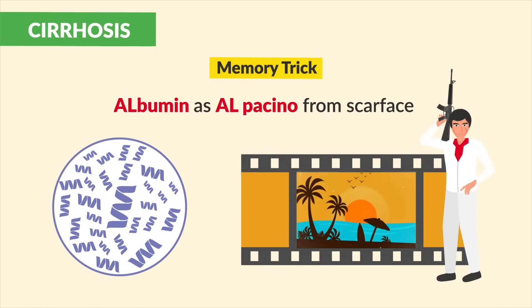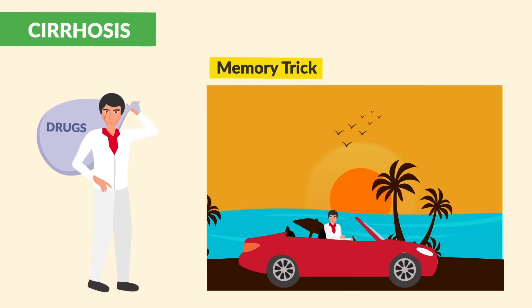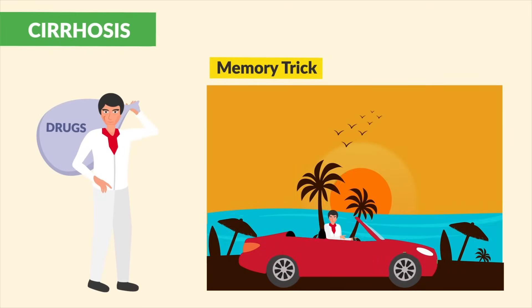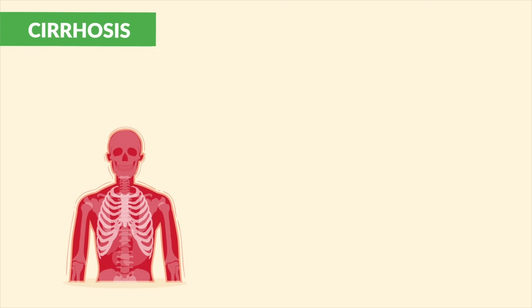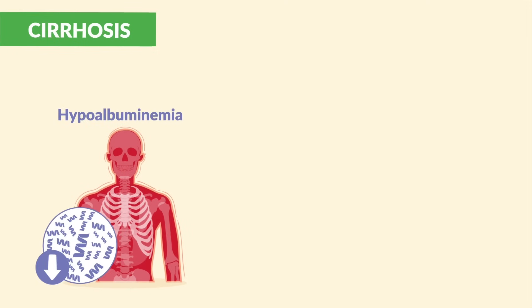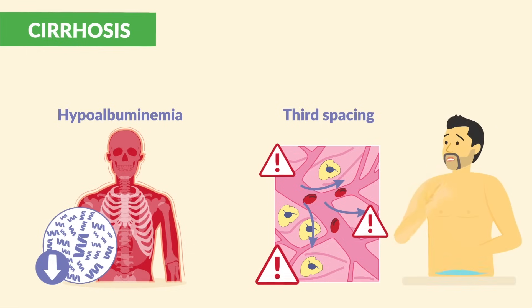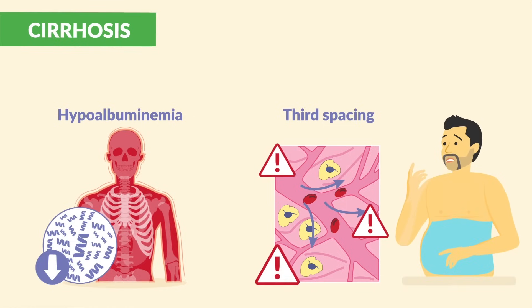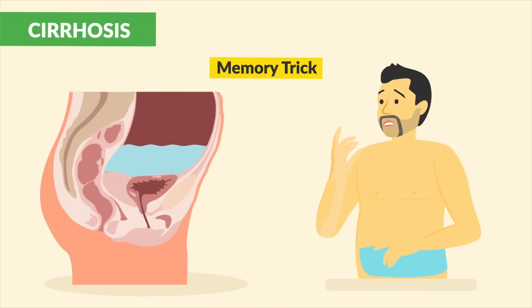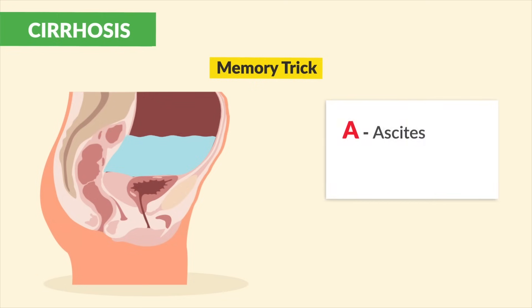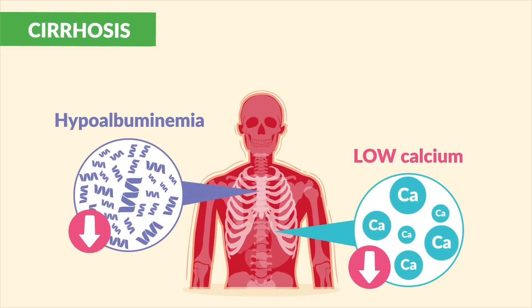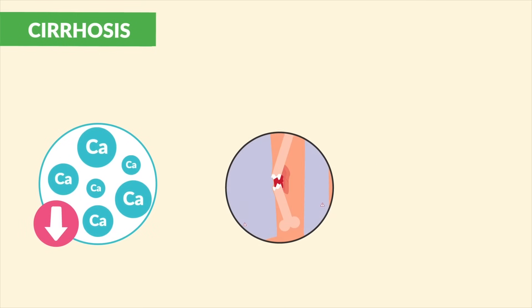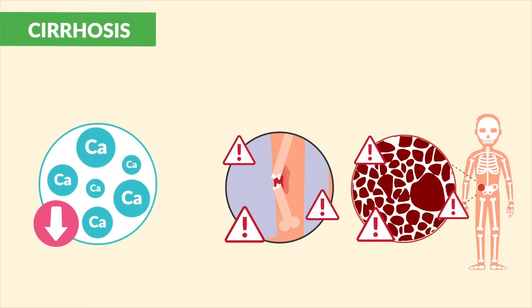Scarface is an old movie from the 80s about a drug lord who transports drugs, near Miami — near the water. When the liver fails in scar-rosis, the body can't produce albumin, causing hypoalbuminemia. Drugs don't get transported properly, and water builds up inside the body because albumin isn't there to attract it, causing edema and third spacing like ascites — where the abdomen is filled with fluid. We also see low calcium in the blood due to low binding, leading to weak bones with risk for fractures and osteoporosis.